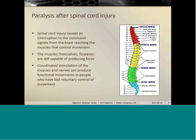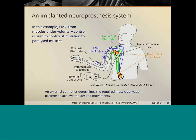So if we can provide coordinated stimulation artificially to those muscles and nerves directly, then we can achieve functional movement for a user who's lost voluntary control of those muscles. And our particular focus has been on the upper limb.